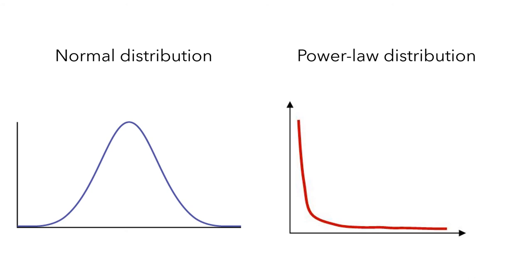Do you remember the difference between a normal distribution and a power law distribution? The quality of an idea tends to follow a normal distribution — there are a few very good ideas and a few very bad ideas, and most ideas are okay. But the success of an idea tends to follow a power law distribution — very few ideas are extremely successful or popular, and most ideas remain on the long tail, constrained within small social circles.